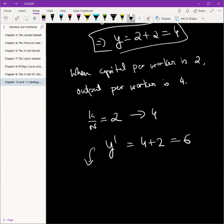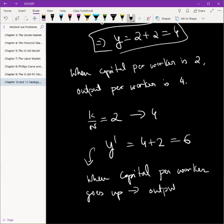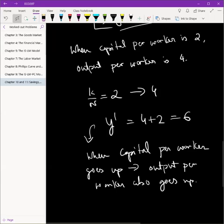Economically, what does this mean? What this means is that when capital per worker goes up, output per worker also goes up. So what's the takeaway from this? I mean, we knew the takeaway already, which is that as we increase the capital stock in the economy, as each worker has more capital, more machines and equipments to work with, their output goes up. As small k goes up, small y goes up. So that's the end of part E.